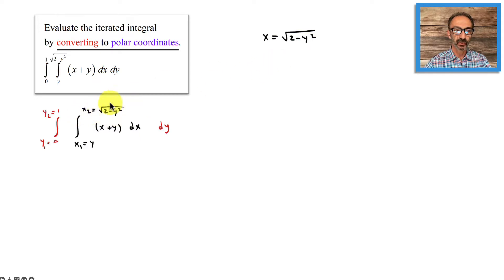If x equals square root of 2 minus y squared, we could square both sides. We get x squared equals 2 minus y squared, and we could move the y squared to the other side and I have x squared plus y squared equals 2.